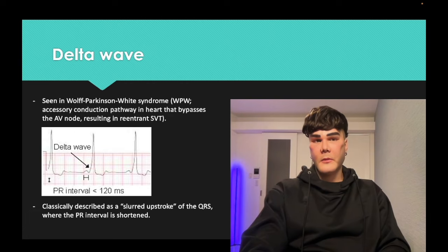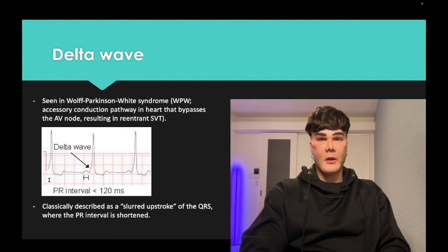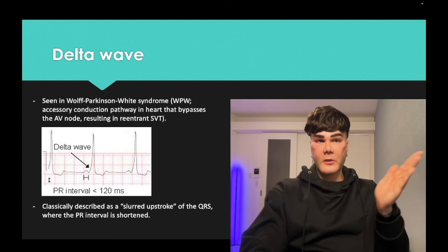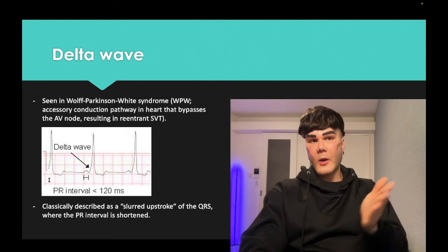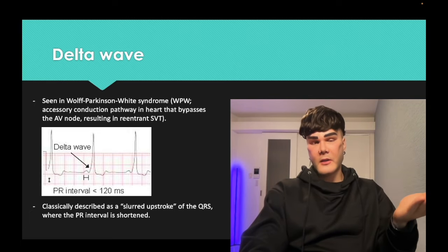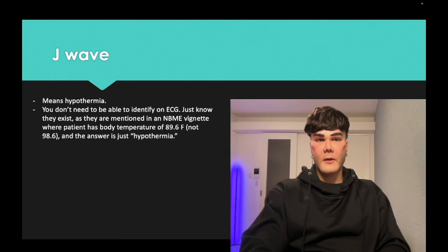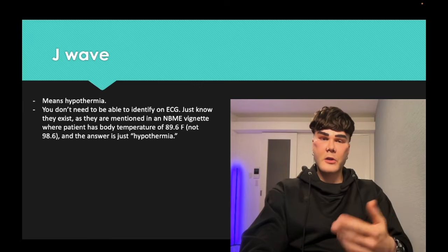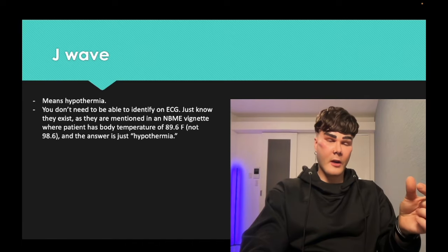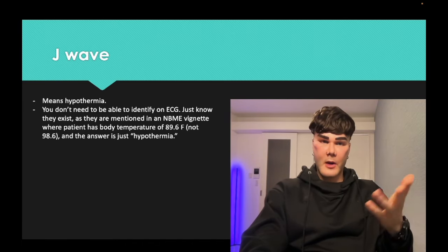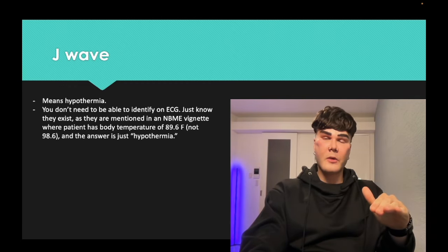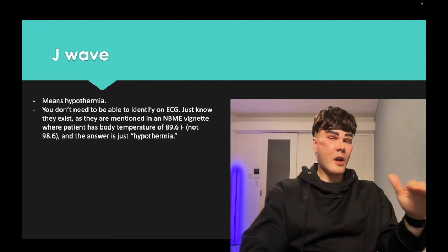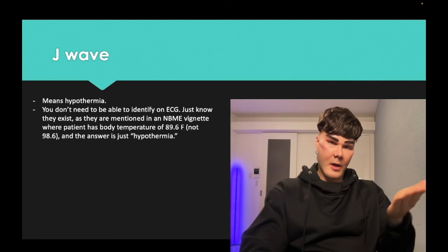Delta wave — Wolf-Parkinson-White syndrome. It's a type of reentrant tachycardia with an obscure upstroke of the QRS complex called a delta wave — a slurred upstroke. Pretty low yield but worth knowing. J wave shows up for hypothermia. There's a question where the patient's temperature is 89.6°F and a J wave is mentioned in the vignette — you don't need to identify it on ECG, just recognize that J wave means hypothermia when the temperature is clearly low.